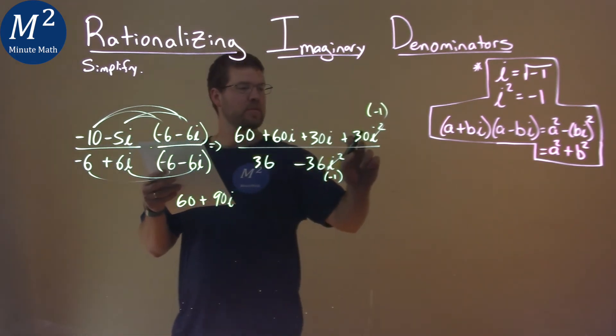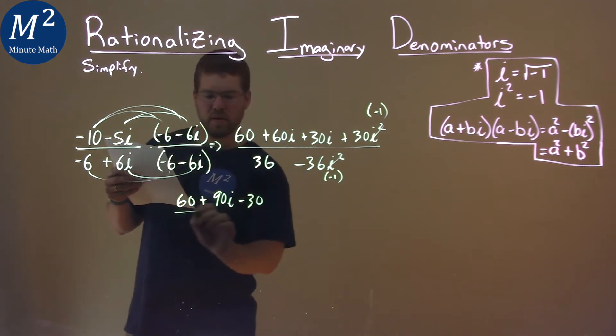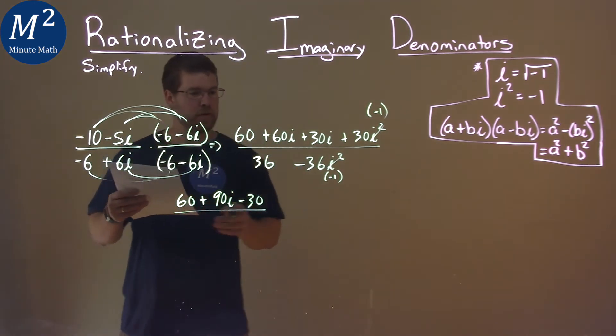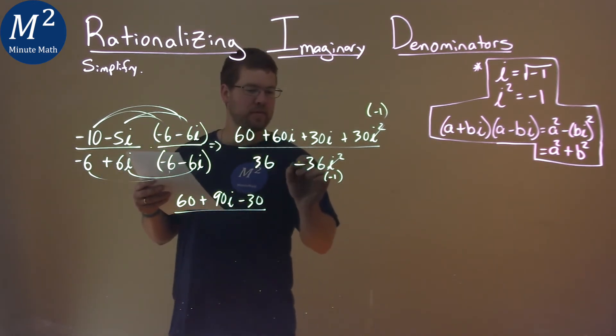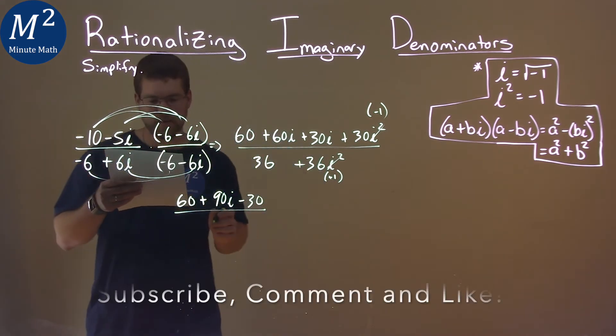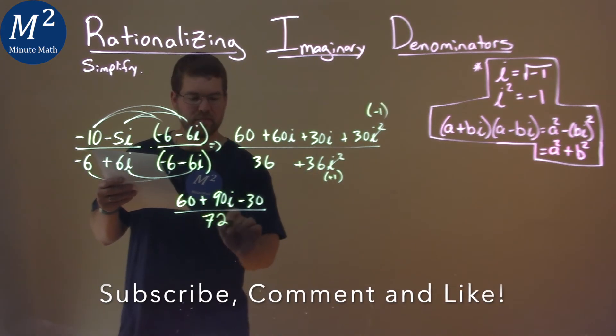And then 30 times negative 1 is negative 30. Over... negative 1 times negative 36 is positive, so 36 plus 36 is 72 here.